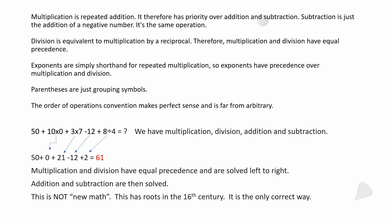When we go down the order of operations, we have no parentheses, we have no exponents, we go next to multiplication or division solving left to right. So 10×0 is 0, then 3×7 is 21.